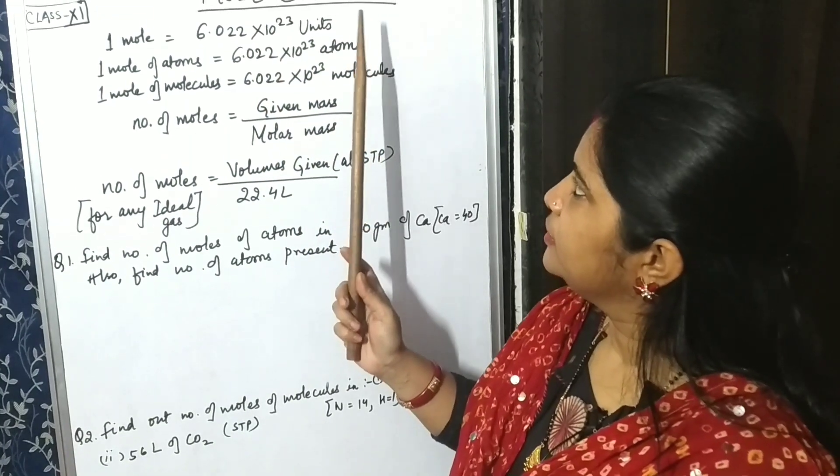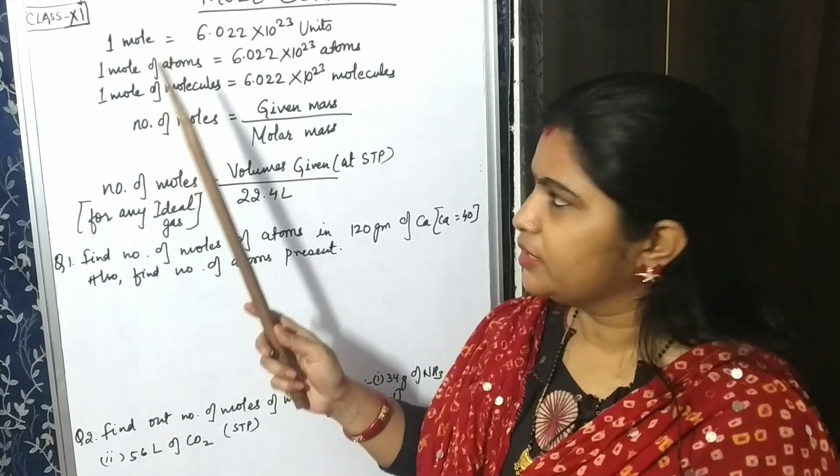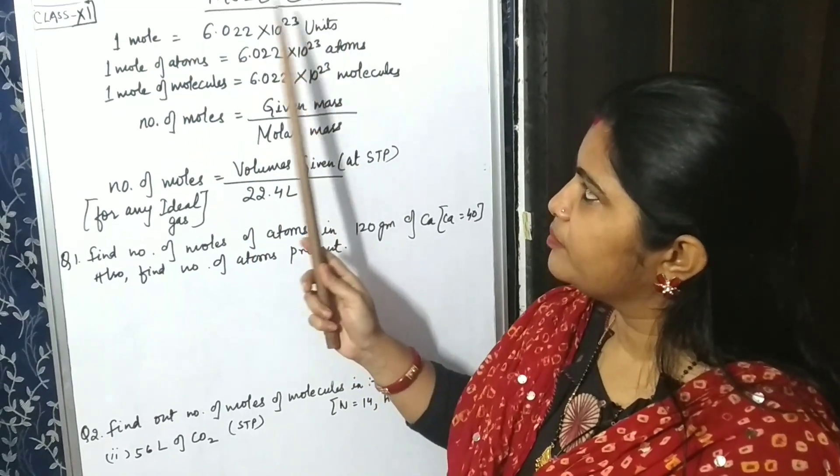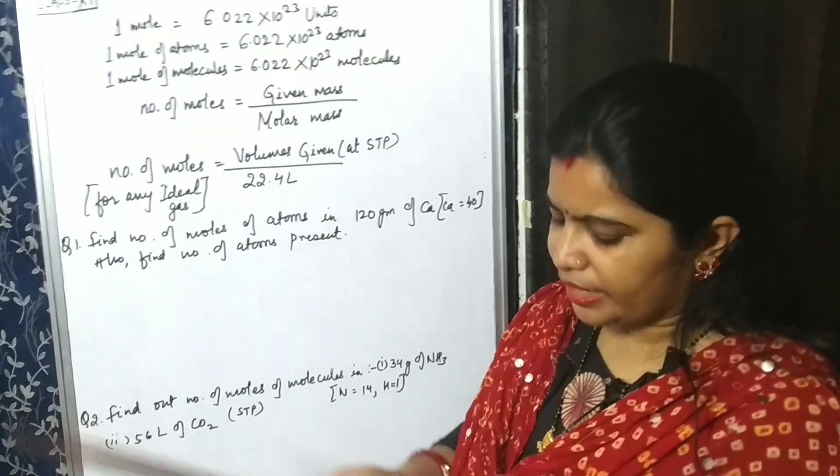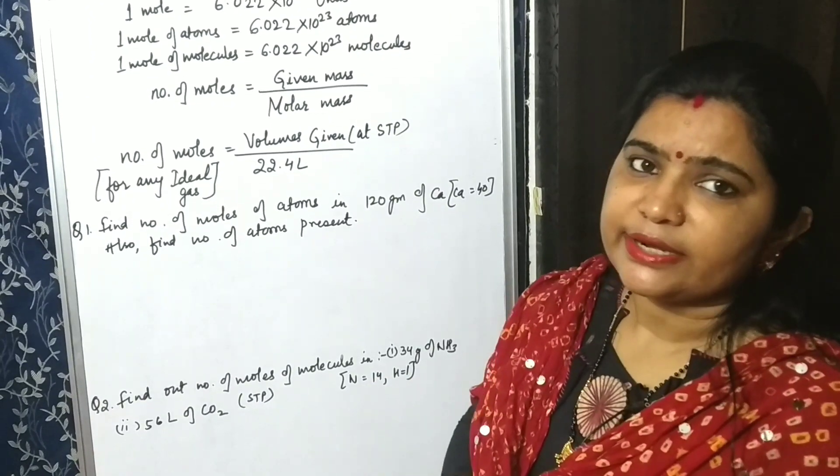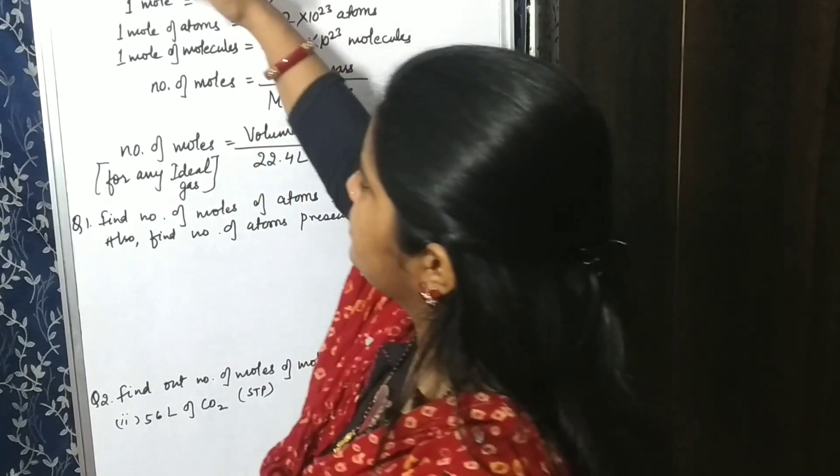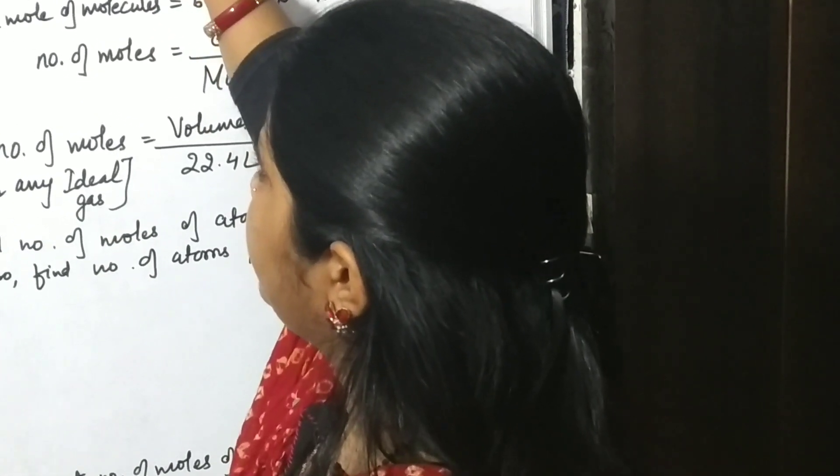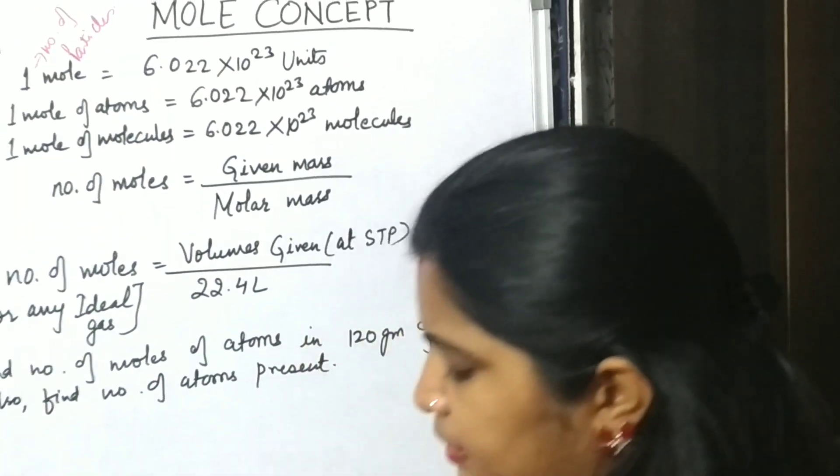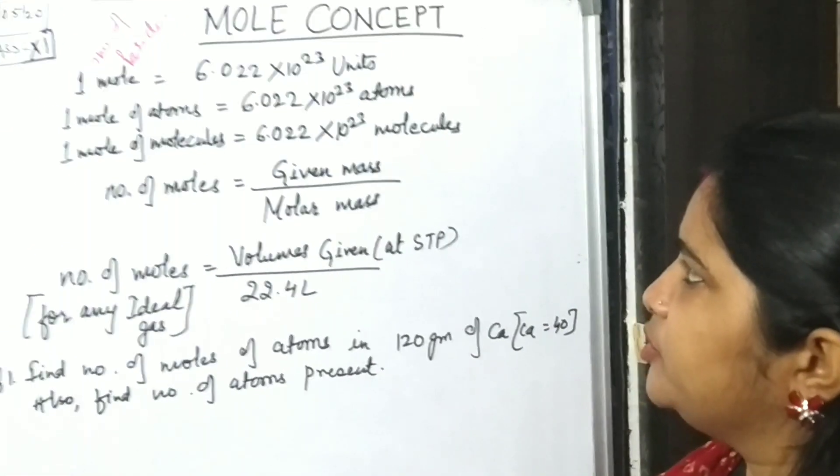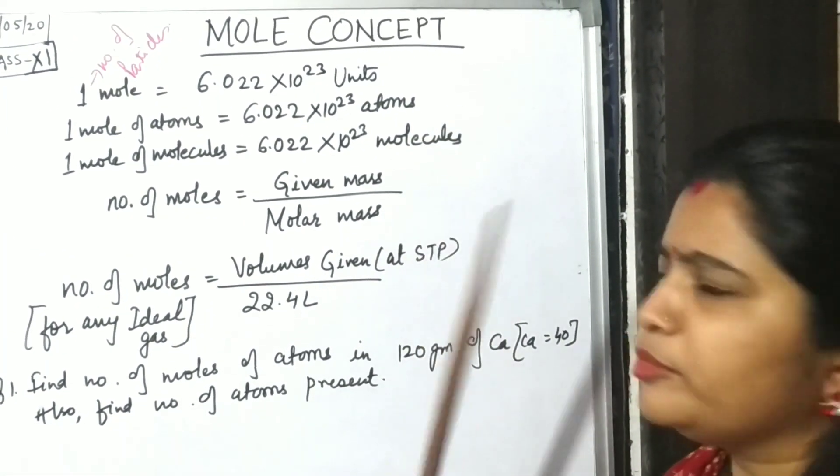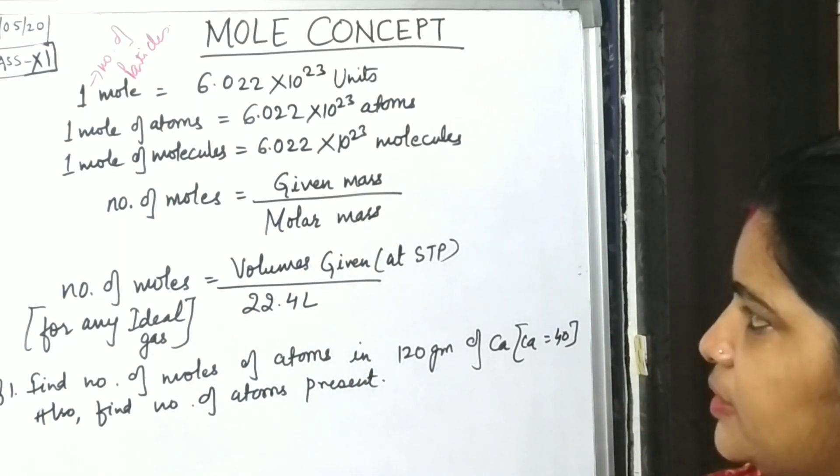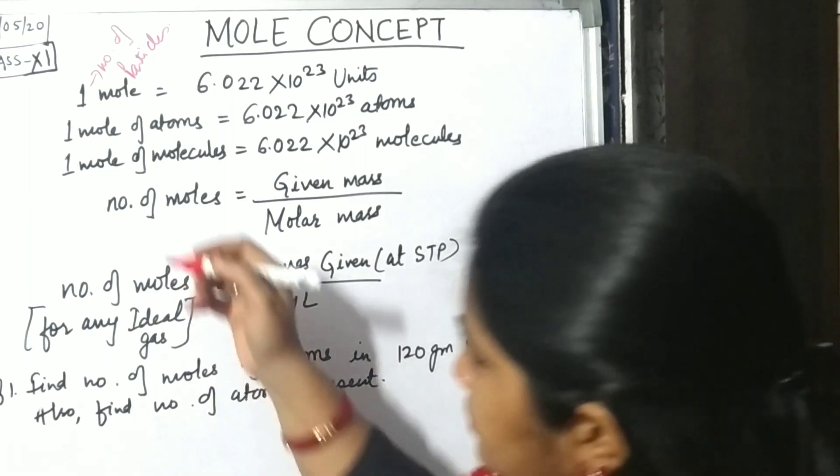See children, we already have knowledge that one mole equals to this number of particles. Actually, what does mole indicate? It indicates the number of particles. These particles could be in terms of either atoms or molecules or sometimes ions also. So you have to remember a simple formula.